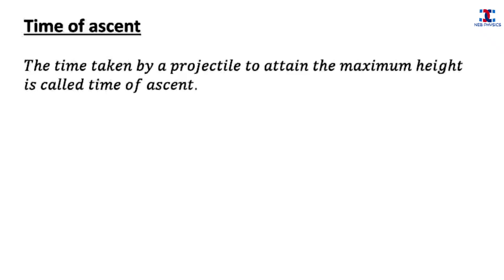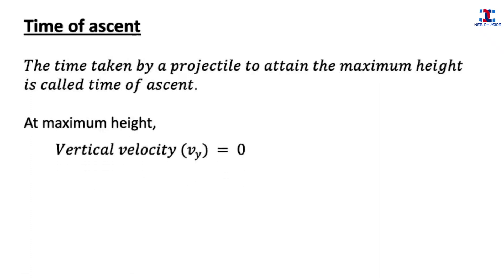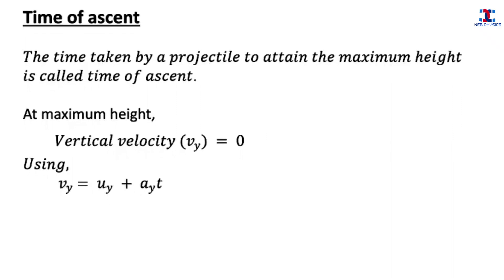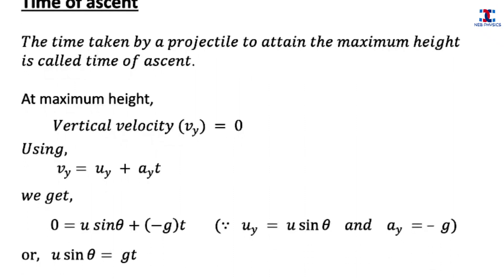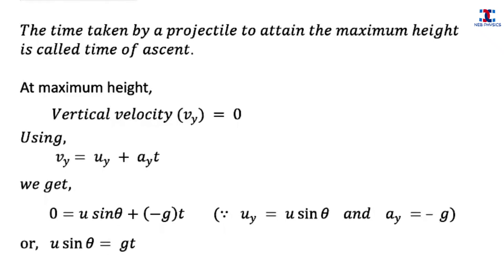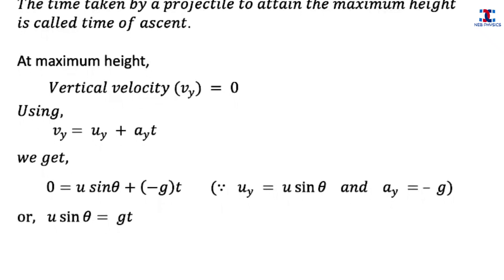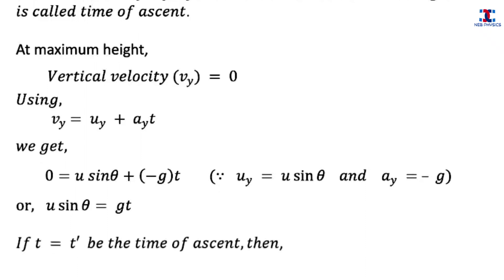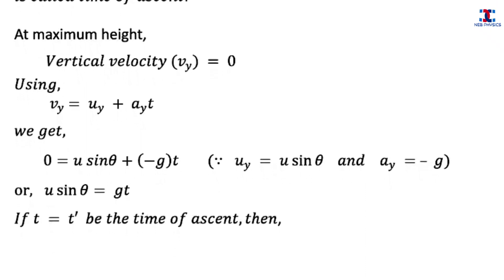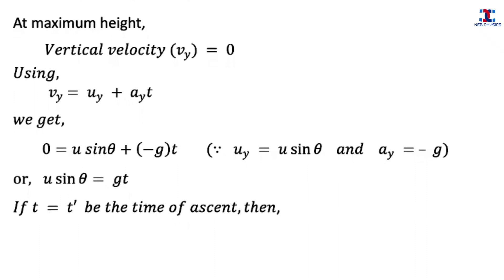Now let's derive the expression for time of ascent. The time taken by a projectile to attain the maximum height is called the time of ascent. We already know that at maximum height the vertical component of velocity vy equals 0. Using the equation of motion, vy equals uy plus ay·t, and substituting the values of vy and ay, we get u sin theta equals g·t. Representing the time of ascent by t', we get the expression as t' equals u sin theta divided by g. Let this be equation 3.